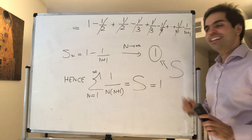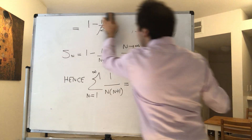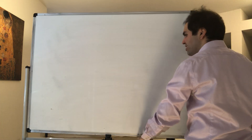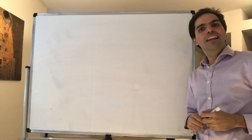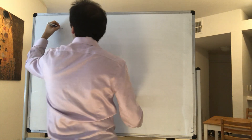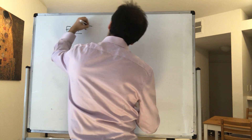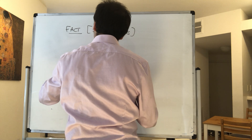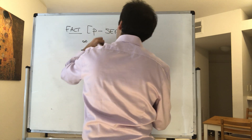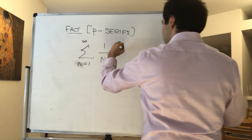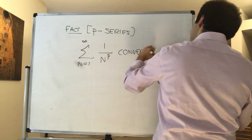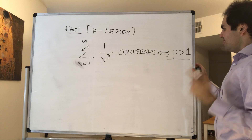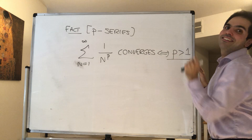We'll do another example in the next video, but just a couple of remarks. Ideally we would need a good list of examples of convergent series. Luckily there's a quintessential list called the p-series. Fact — we'll show this later. The sum from n equals 1 to infinity of 1 over n^p converges — the value is finite — if and only if p is greater than 1.